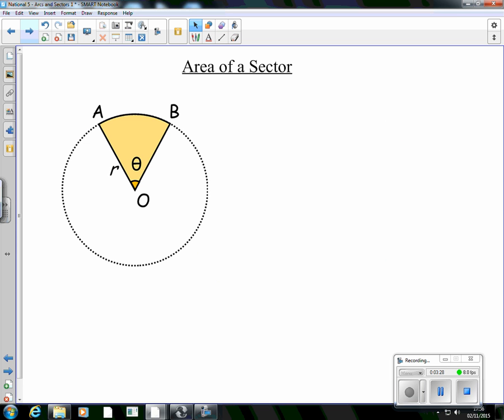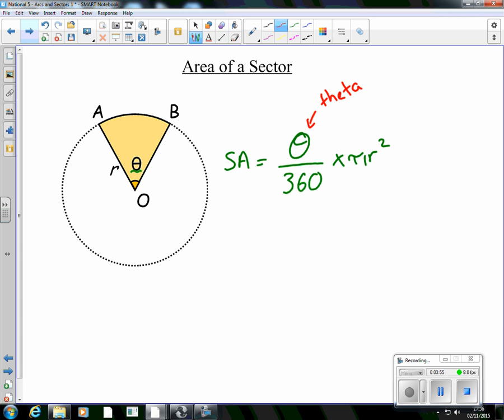No matter what angle we have, no matter what angle is in the middle there, if we put that angle over 360 and multiply it by the total area of the circle, we'll get the fraction of the circle that we want. Let's call that sector area. So sector area equals, this symbol here is theta. It's a Greek letter, just used the same as x and y. It's just like algebra. We've got the θ over 360, multiplied by this area.